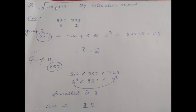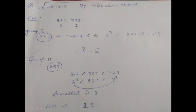Find the cube root of 857,375 by estimation method. First, make groups: the last three digits form the first group, and the remaining digits form the second group. Take the first group — find the cube ending in that unit digit. The cube of 5 is 125, so the unit place digit of the answer is 5. Write 5 here.